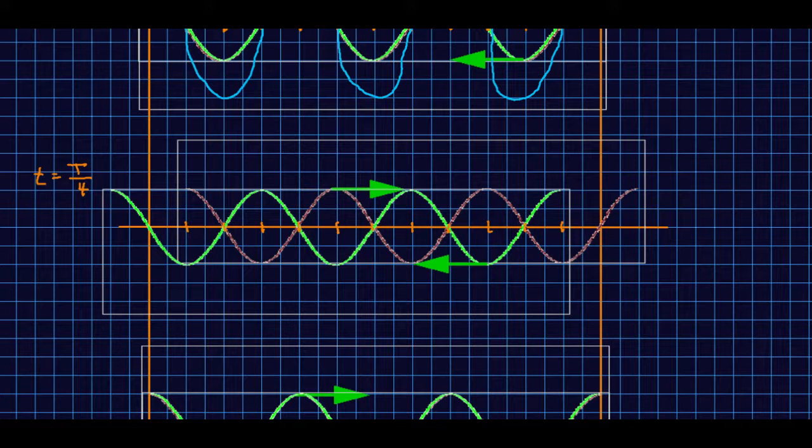If you now look at what the total displacement would be, we've got crest on top of trough that's 0. In fact no matter where you look they're mirror images of each other, they're going to add to 0 everywhere. So at the moment we've got a flat line.